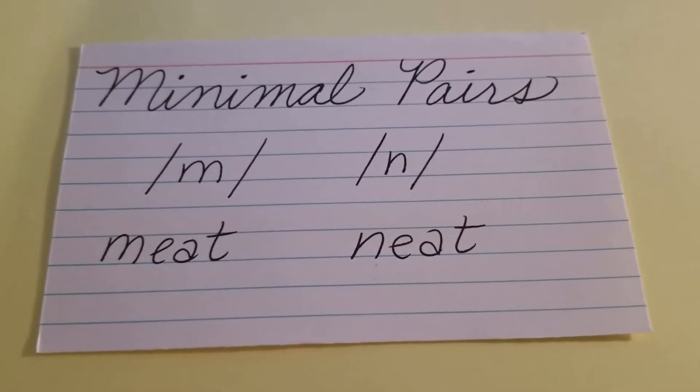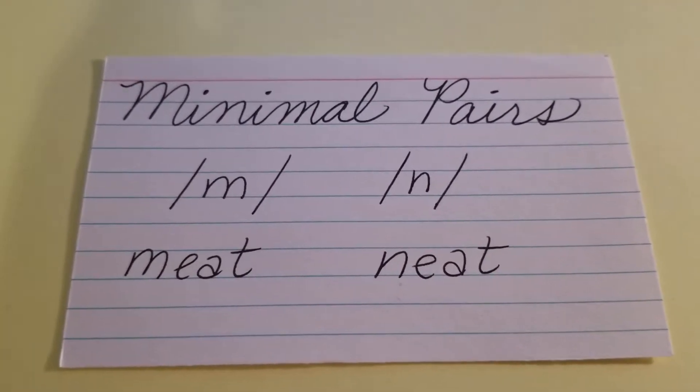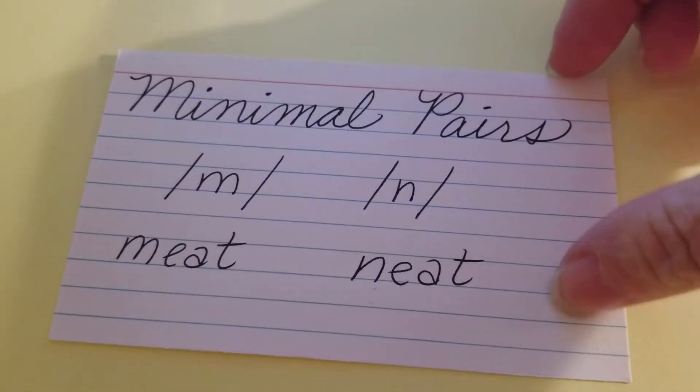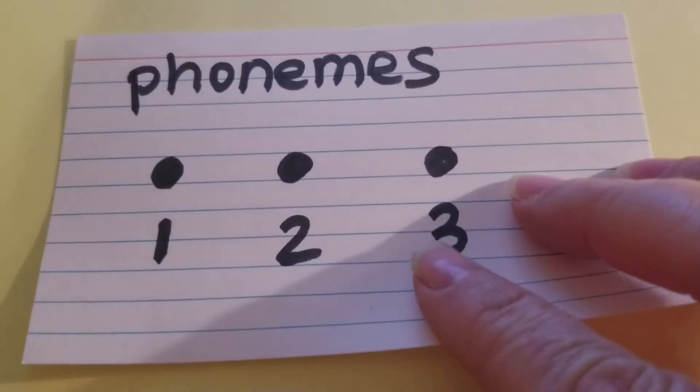Well, now you've got minimal pairs with /m/ and /n/, like meat and neat. So let's begin practicing with these ones. Here we go.